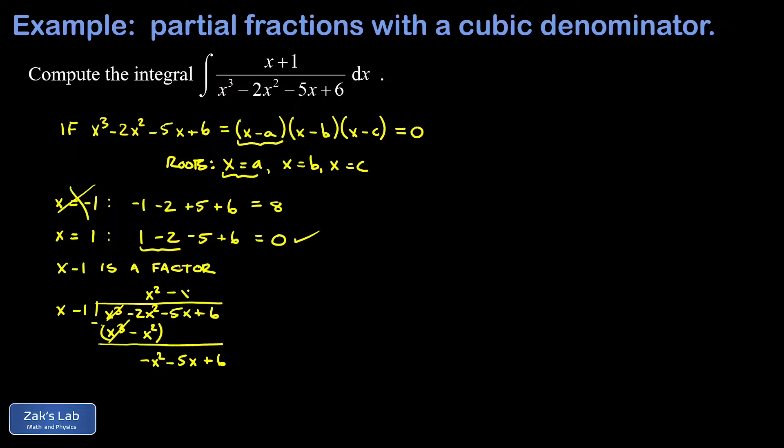Now we guess our next term. That's a negative x. When I distribute that over x minus one, it gives me negative x squared plus x. And again, we subtract. Again, the leading terms cancel by design. And then I have a negative five x minus x. That's negative six x and a plus six. So our next guess, negative six. When I distribute that over x minus one, I get negative six x plus six. And then when I subtract, I get zero. So there's no remainder. In other words, it divides evenly. So our denominator has factored into x minus one multiplied by x squared minus x minus six.